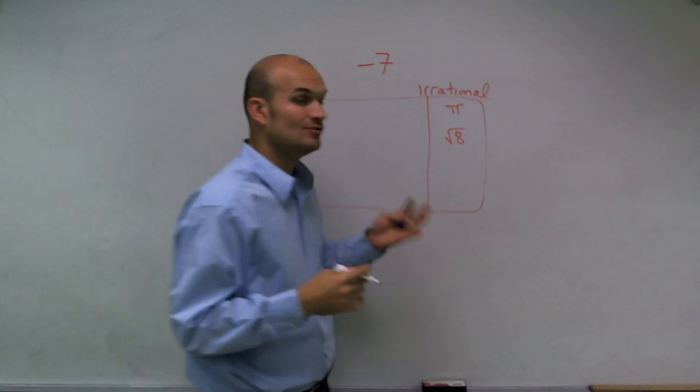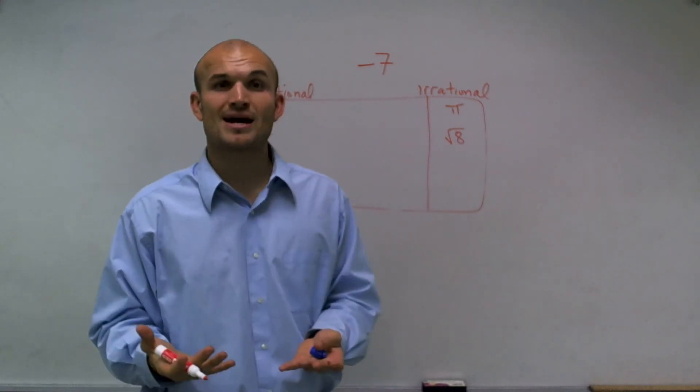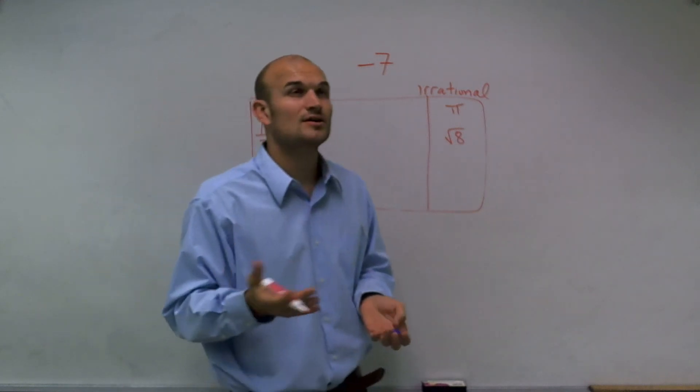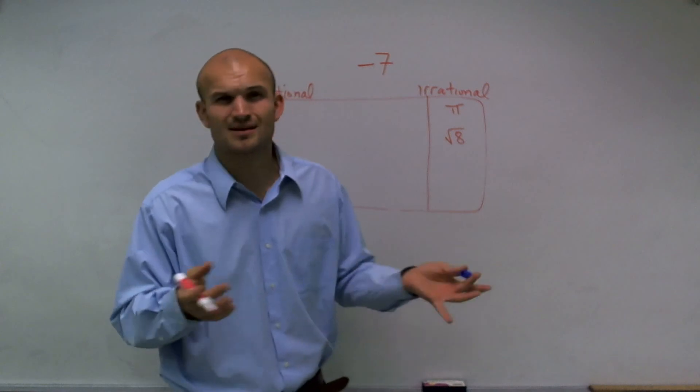The other one is square root of 8. When you type in square root of 8 into your calculator, you get an approximation of 2.6457513, something like that.